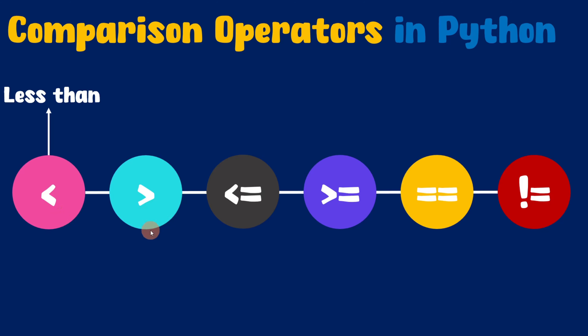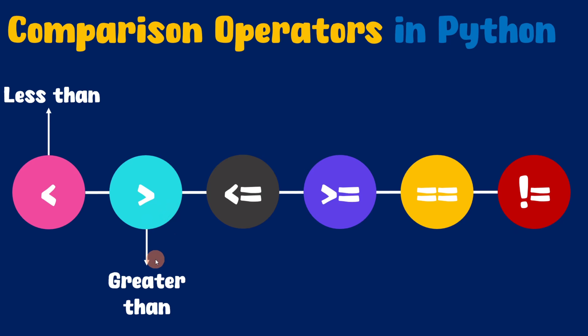Next we have the greater than comparison operator. Greater than comparison operator will take two values. If the value present on the left hand side is greater than the value present on the right hand side, then the greater than comparison operator will return true. Otherwise it will return false.